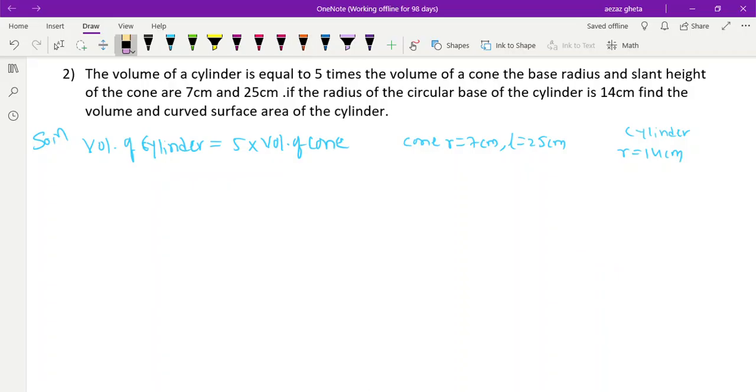To find h we use: volume of cylinder πr²h equals 5 times 1/3 πr²h. We'll use h₁ for cylinder height and h₂ for cone height. π cancels.